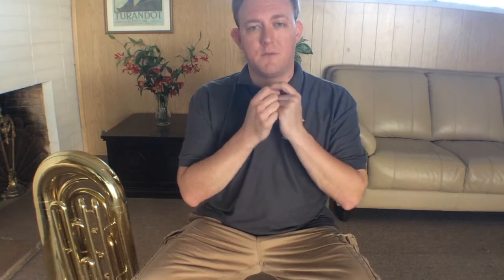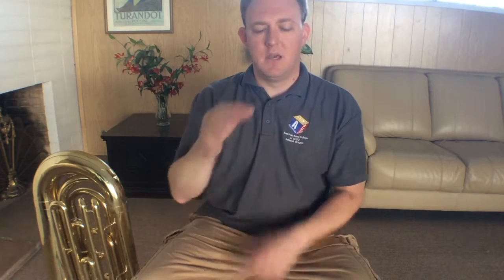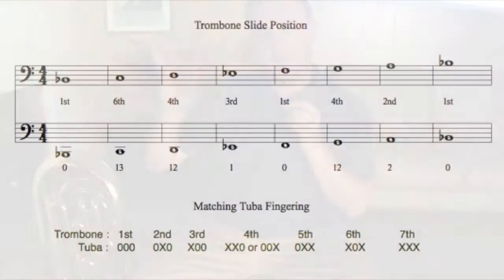If you're a baritone player, you'll recognize the pattern very quickly. On a trombone, whenever you're in first position — no slide out at all — think of that as the same as no valves on a brass instrument like a baritone. This also works when switching to baritone. When you go to second position, that is like a valve instrument playing second valve. When you go to third position, that is like a valve instrument playing first valve.